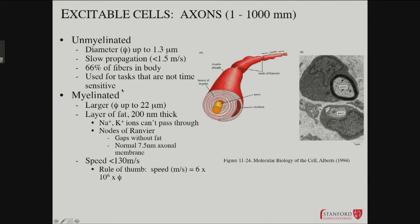There are both unmyelinated and myelinated fibers. Vertebrates have unmyelinated fibers that tend to be smaller, slower, and used for tasks that are not as time sensitive. Myelinated ones can be quite large, up to 22 microns thick, with a thick layer of fat around them.